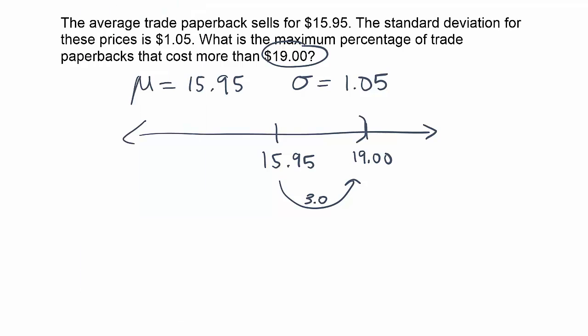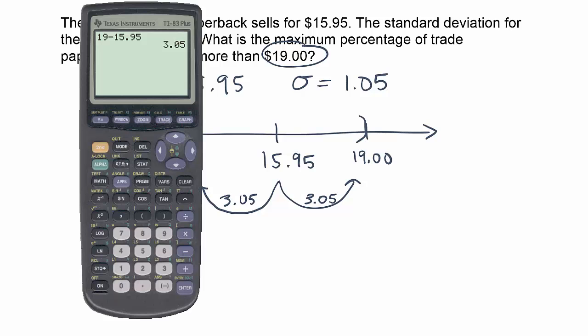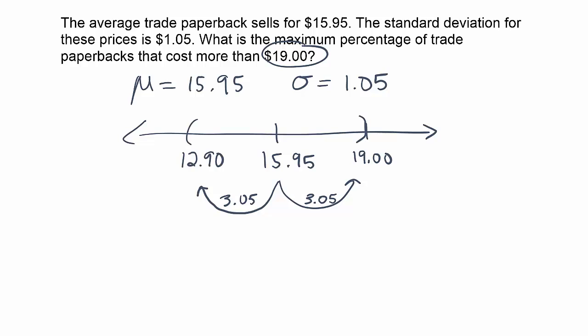I'm going to write that down here as a mental note. Because Chebyshev's theorem must be used on an interval that is symmetric with respect to the mean, I know that I have to go the same distance this way to get an interval to work with. So in other words, I need to move $3.05 away from $15.95 in the other direction. So that means I'm going to take $15.95 and subtract $3.05, which of course gives us $12.90. So there it is, $12.90.